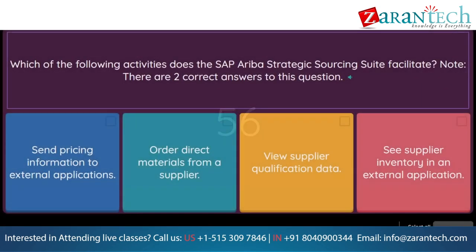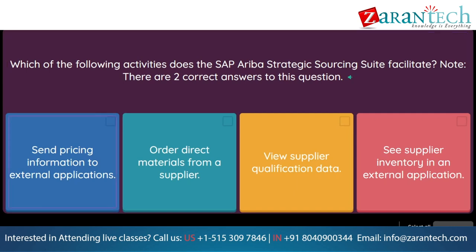Question: Which of the following activities does the SAP Ariba Strategic Sourcing Suite facilitate? Note, there are two correct answers to this question. Option 1: send pricing information to external applications. Option 2: order direct materials from a supplier. Option 3: view supplier qualification data. Option 4: see supplier inventory in an external application.